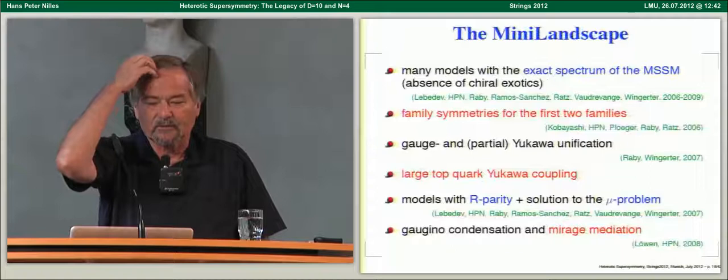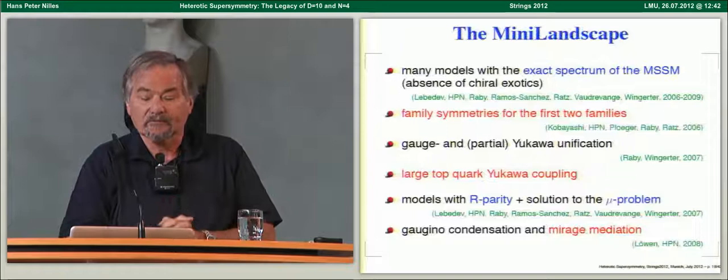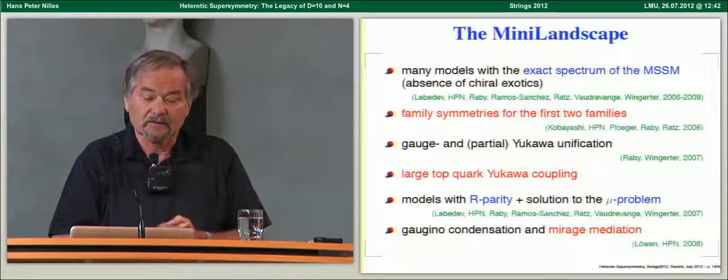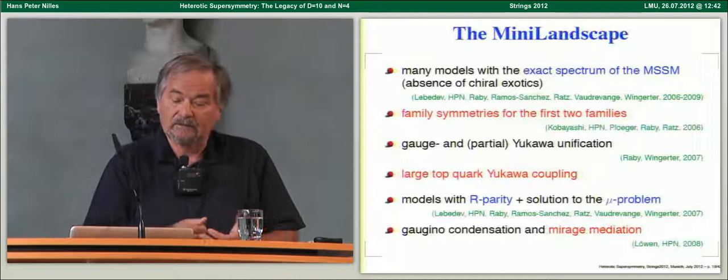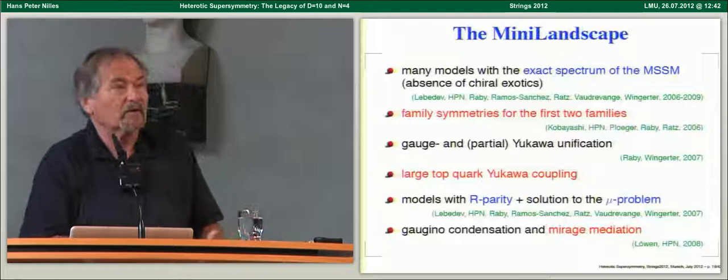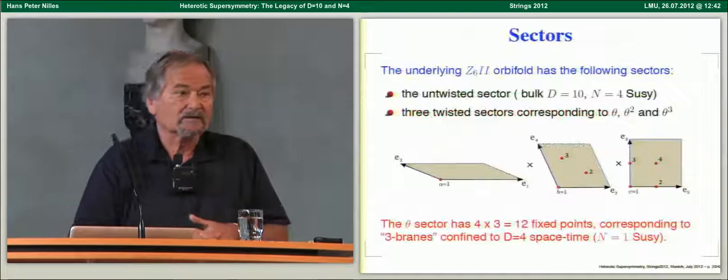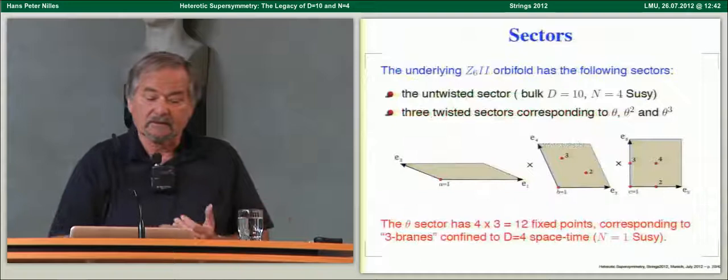This construction is what we called the mini-landscape, based on a Z6-II orbifold. We performed a computer-assisted search and found several hundred models with the exact spectrum of the MSSM — no exotics — along with family symmetries, Yukawa unification, large top-quark Yukawa couplings, matter parity to forbid fast proton decay operators, and ideas for supersymmetry breaking. The Z6-II orbifold was chosen because it has both fixed points and fixed tori, and because 6 is divisible by 3, which helps in constructing three-family models.